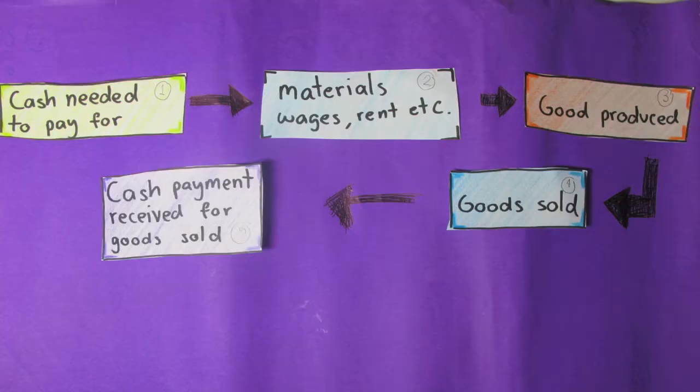The cash flow cycle shows the stages between paying out for labor, materials, and other costs, and receiving cash from the sales of goods. This diagram also helps us to understand the importance of planning for cash flow.